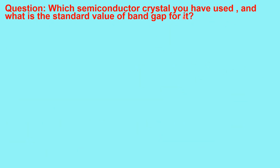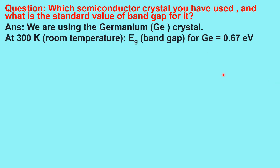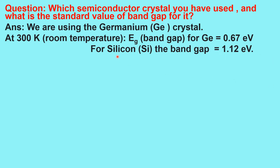Which semiconductor crystal is used and what is the standard value of band gap for it? We are using the germanium crystal. At room temperature or 300 Kelvin, the band gap EG for germanium is 0.67 electron volt, and for silicon the band gap is 1.12 electron volt at room temperature.